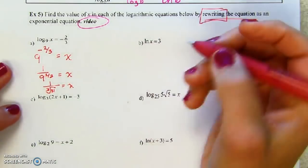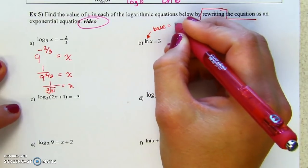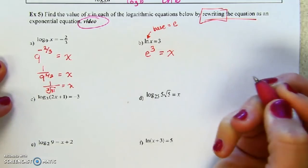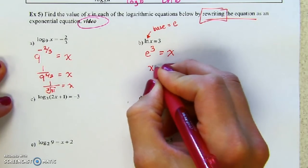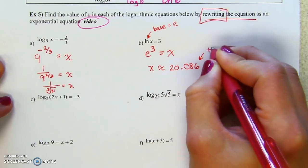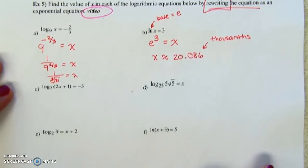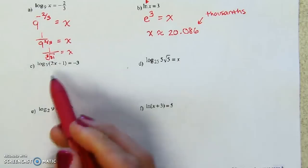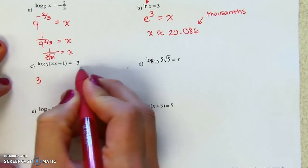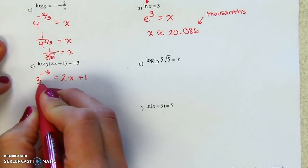Now example B: what have we learned — anytime you see LN, the base is E. So we go e^3 = x. You're done! If you want to type that into a calculator, x is approximately 20.086 to the thousandths place. Example C: rewrite — base is 3, exponent is negative 3. So 3^(−3) equals 2x + 1.